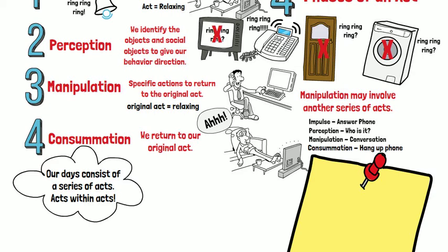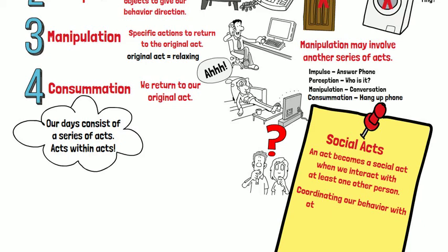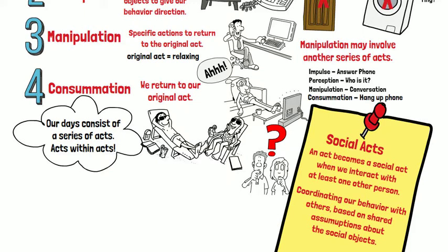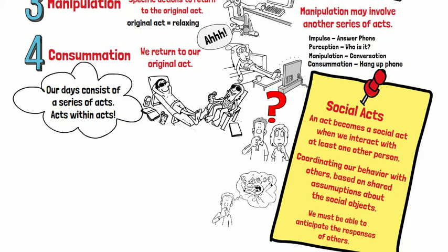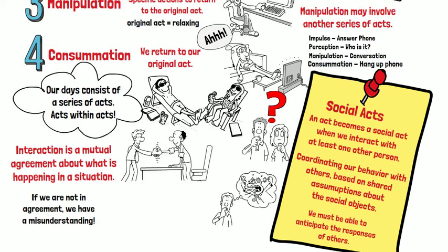An act becomes a social act when we interact with at least one other person. During a social act, we are coordinating our behaviors with others based on shared assumptions and interactions about the social objects. During social acts, we are anticipating the responses of others. Interaction is a mutual agreement about what is happening in a situation. If we are not in agreement, then we have a misunderstanding. Our assumptions about the social objects are made during the perception phase.